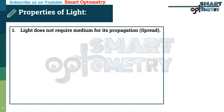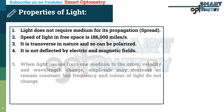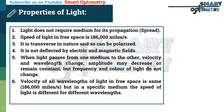Properties of Light. Light does not require a medium for its propagation. The speed of light in free space is 186,000 miles per second. It is transverse in nature and so can be polarized. It is not deflected by electric and magnetic fields. When light passes from one medium to another, velocity and wavelength change, but frequency and color of light do not change.